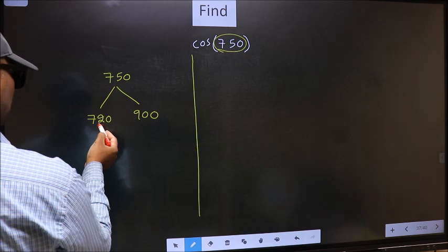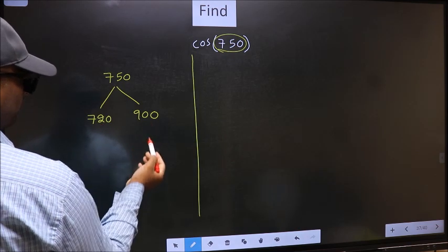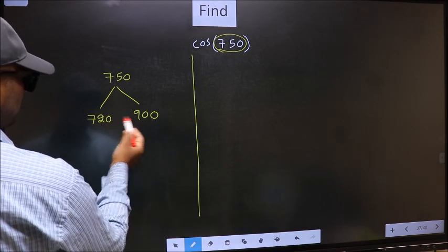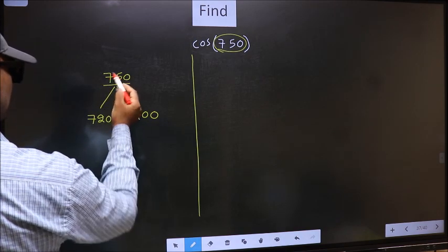This is 180 × 4 and this is 180 × 5. Between these two numbers, 750 lies.